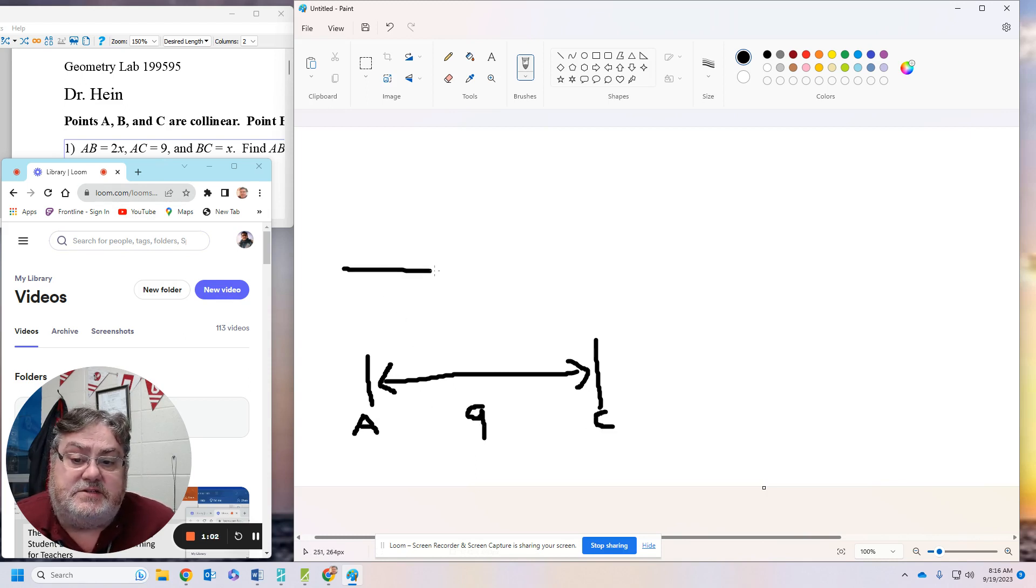I'm going to draw a second line, and it's going to be a line segment. I'm going to have three points: I'm going to have point A, I'm going to have point B, and I'm going to have point C.